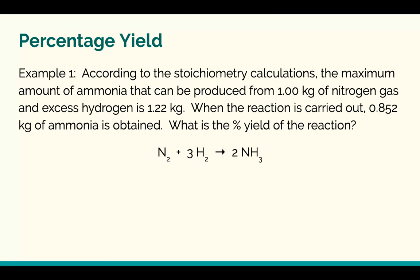According to the stoichiometry calculations, the maximum amount of ammonia that can be produced from 1.00 kilograms of nitrogen gas reacting with excess hydrogen is 1.22 kilograms. When the reaction is carried out, 0.852 kilograms of ammonia is obtained. What is the percent yield of the reaction? And there's the reaction that's happening there.